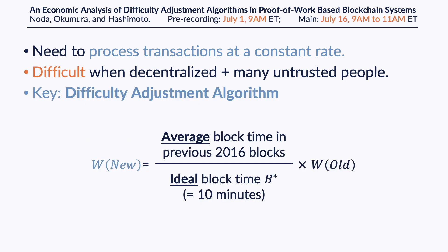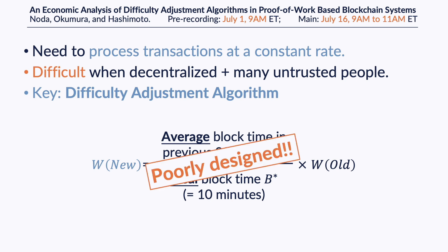To this end, blockchain systems deploy the algorithm named difficulty adjustment algorithm. Our primary finding is that the algorithm used in Bitcoin, the largest and most famous blockchain system, is poorly designed for this purpose.